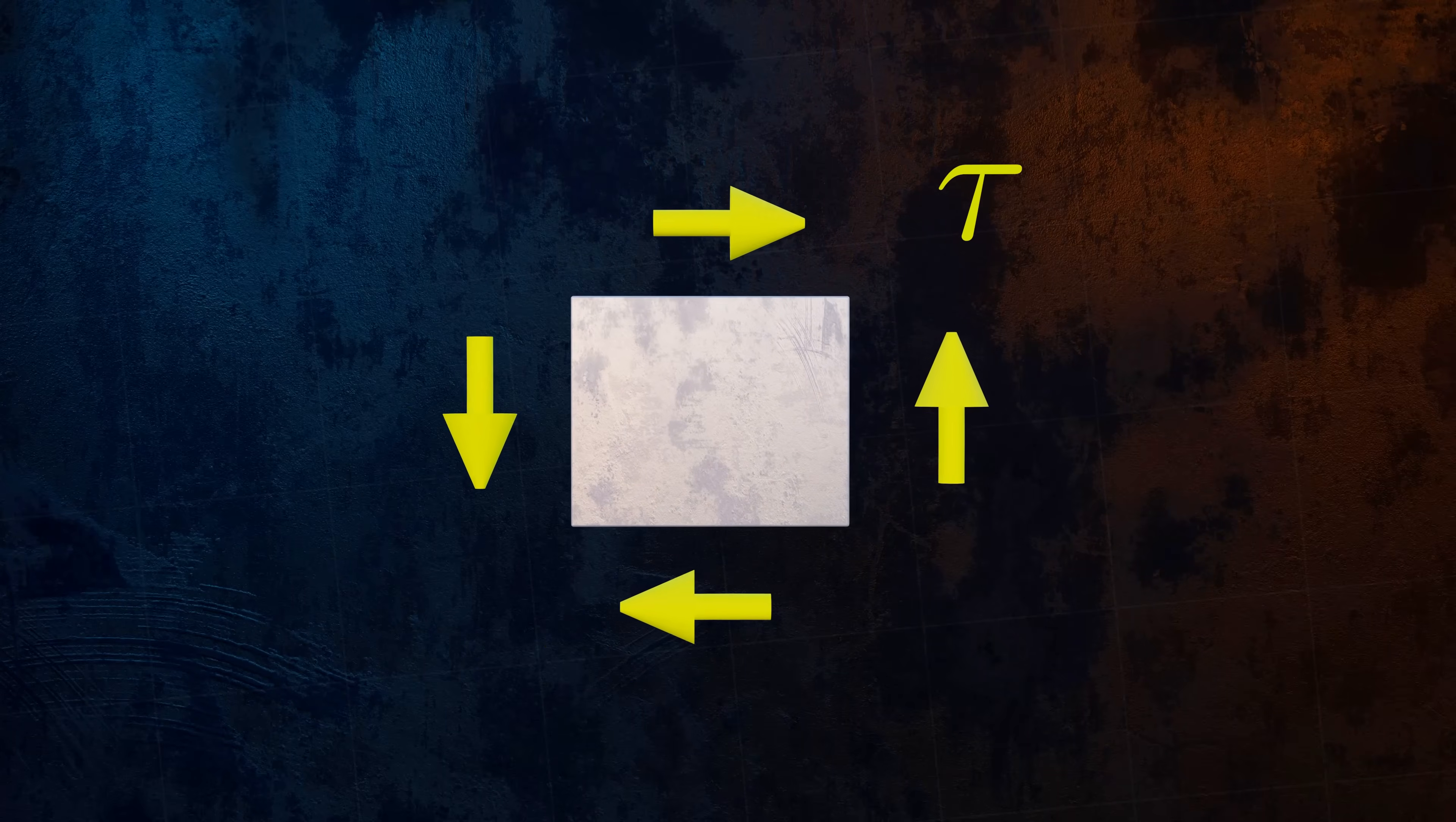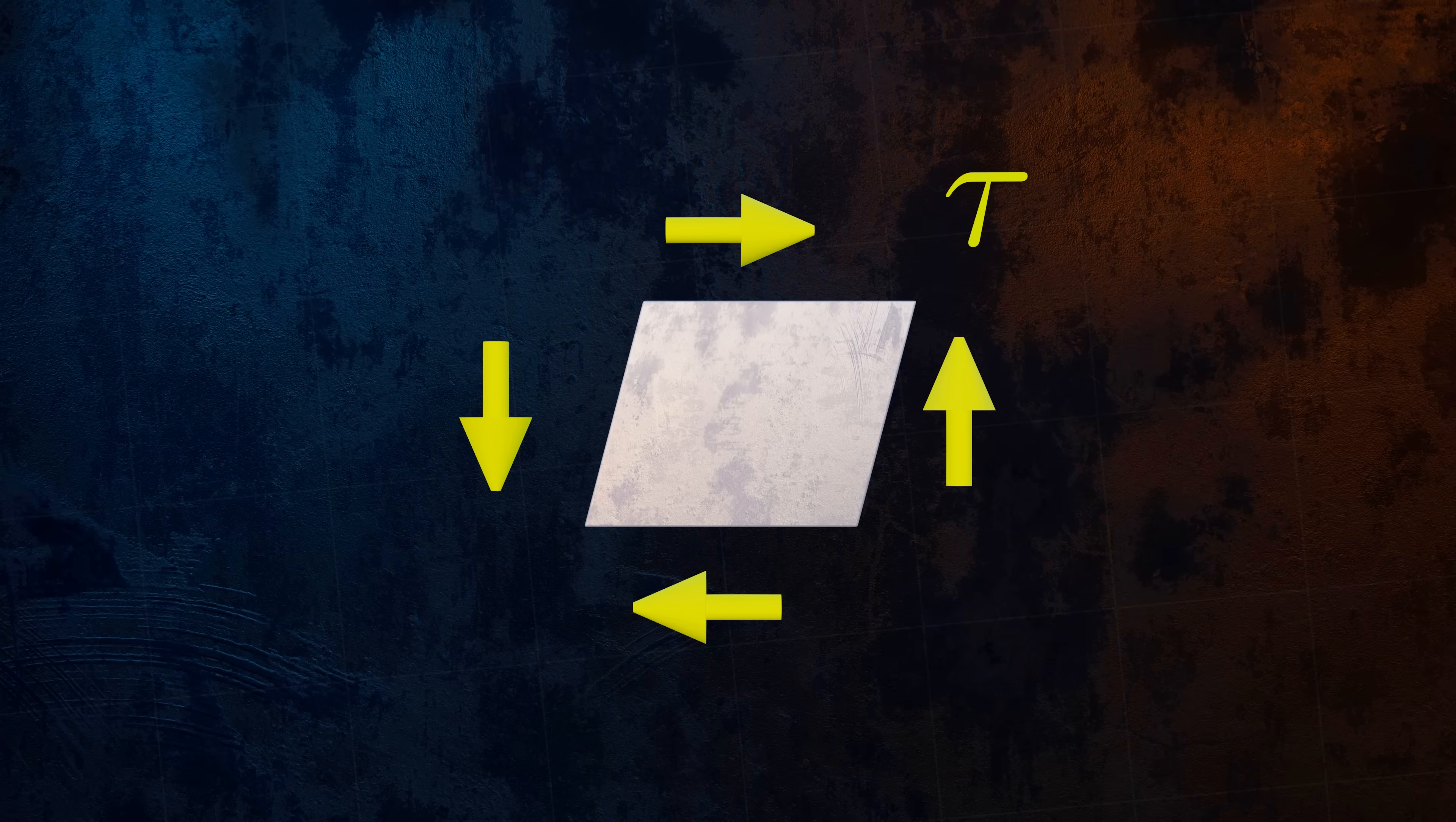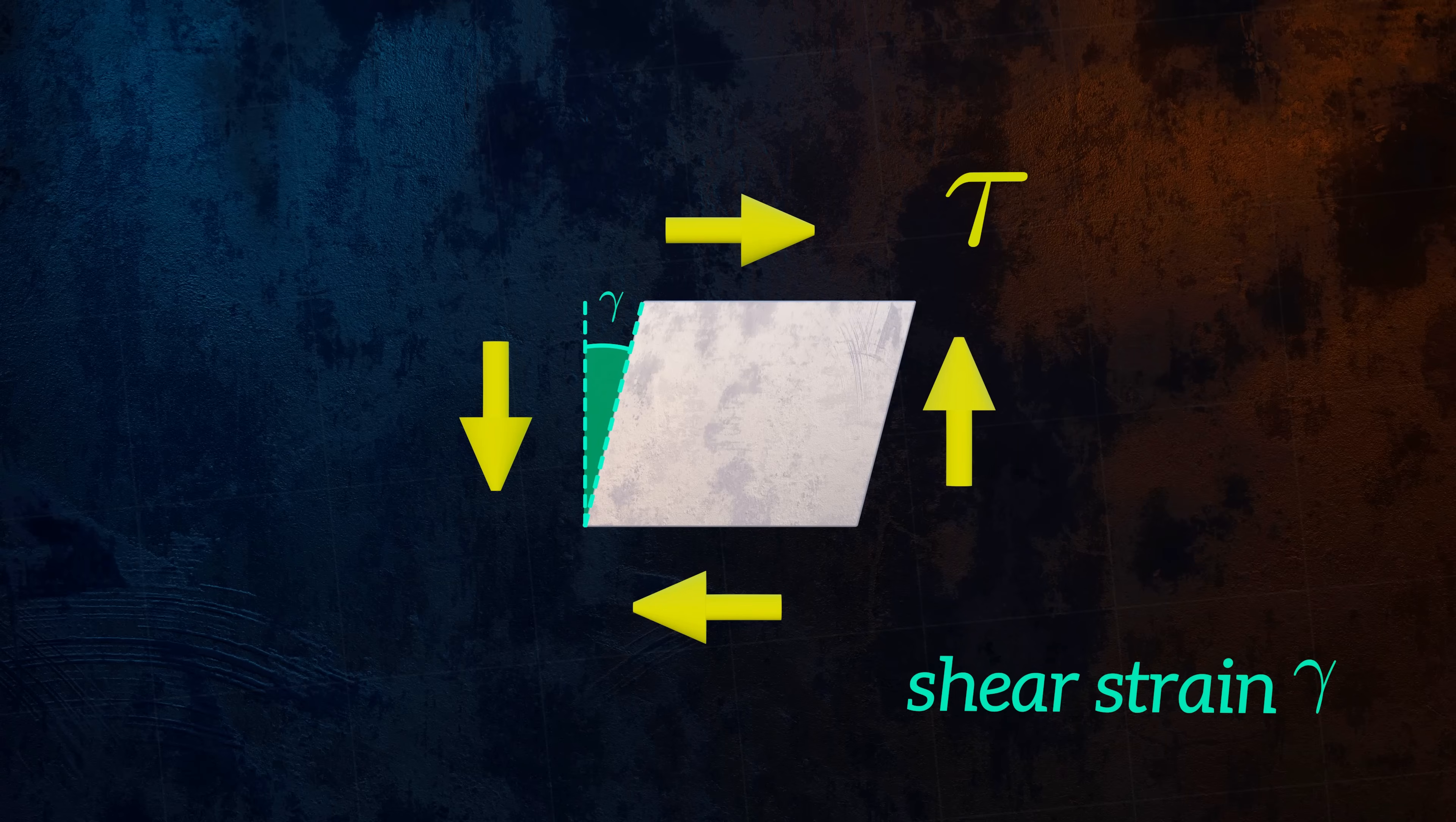Shear stresses cause a rectangular object to deform, like this. We have deformation, so of course we also have strain. Shear strain is defined as the change in angle, shown here, and is denoted by the Greek letter gamma. Hooke's Law also applies for shear stresses and shear strains.